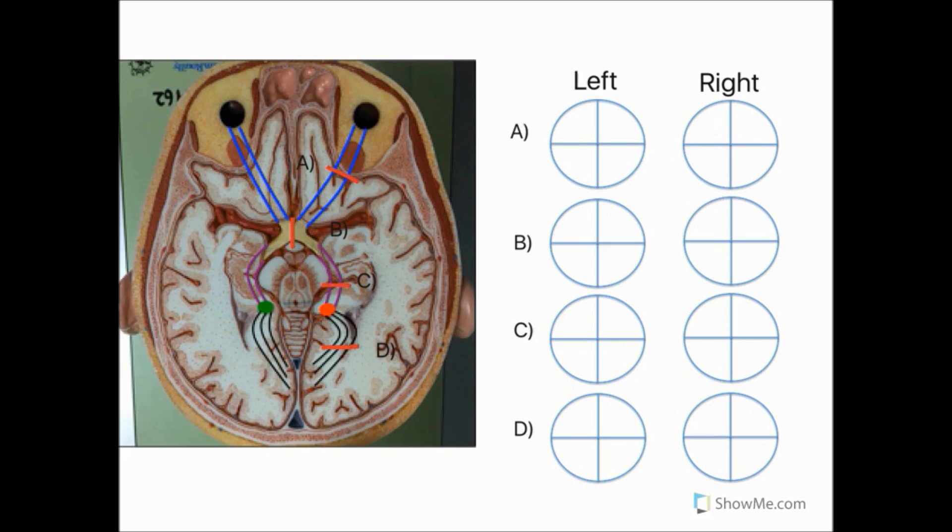A lesion here would cause damage to all the fibres coming from the retina of the right eye, resulting in total blindness. So therefore we would have this pattern in the right visual field, would get loss of all of the vision.